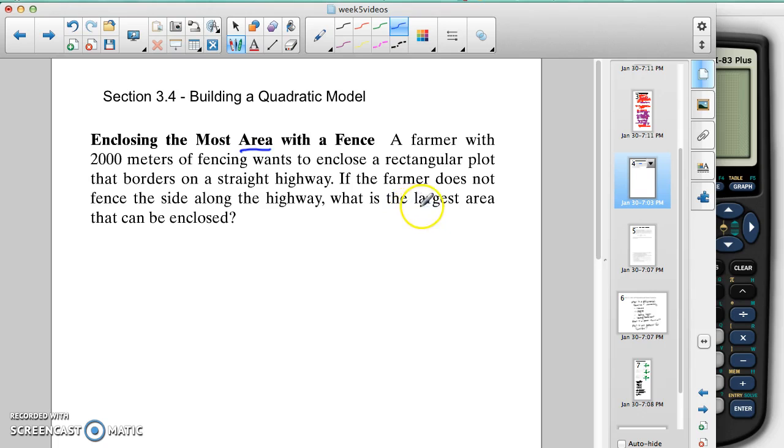Our question here is that we have a farmer with 2,000 meters of fencing and wants to enclose a rectangular plot that borders a straight highway. And he does not want to, or they do not want to, this farmer, he or she does not want to fence along the highway.